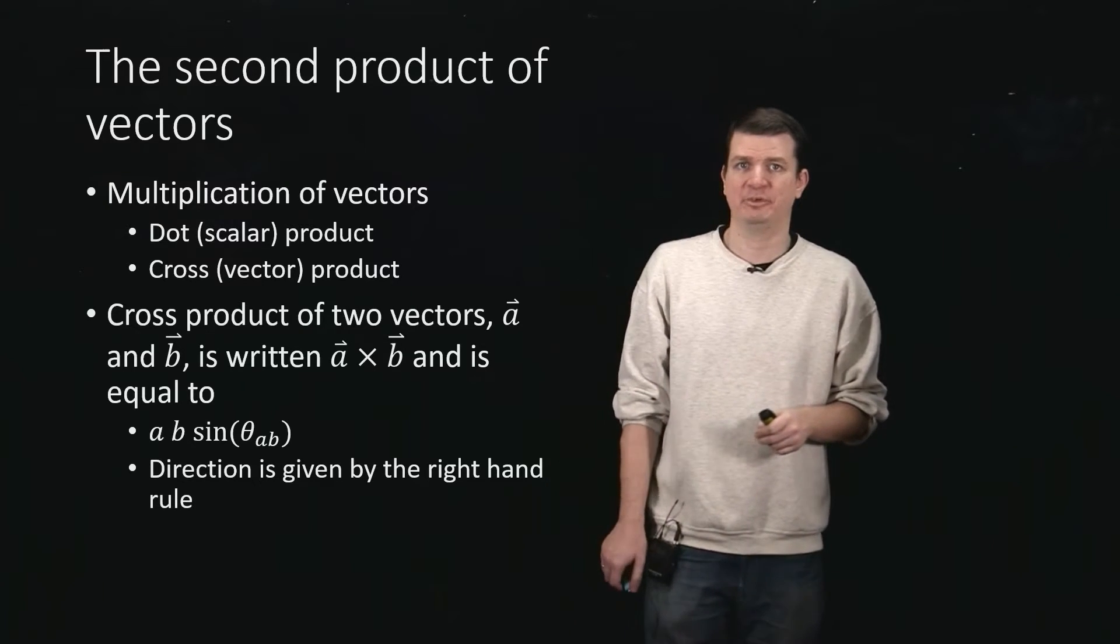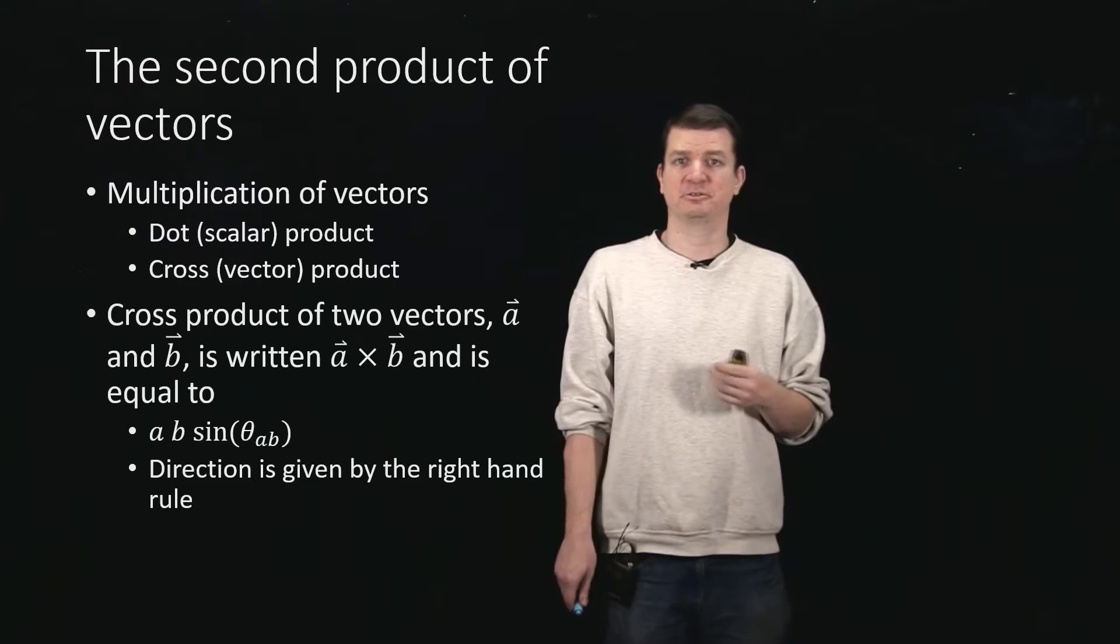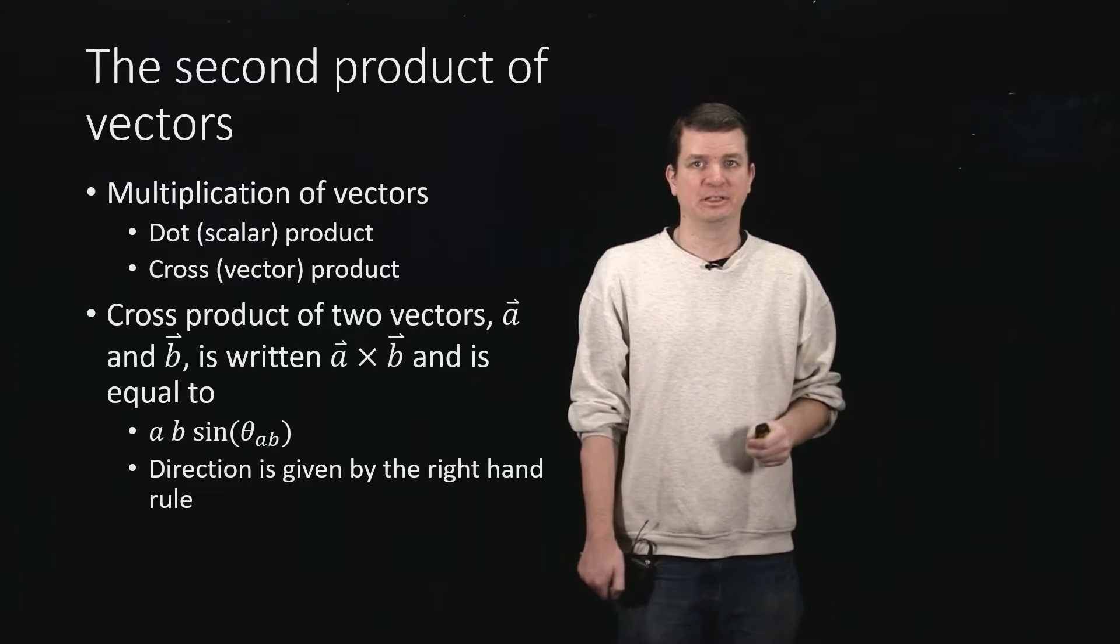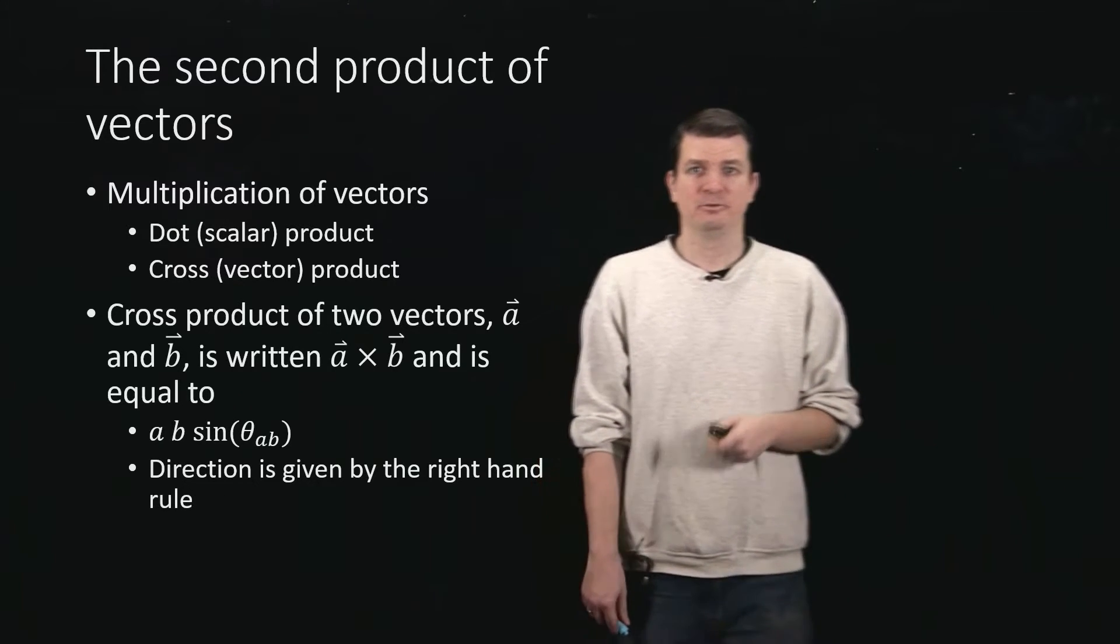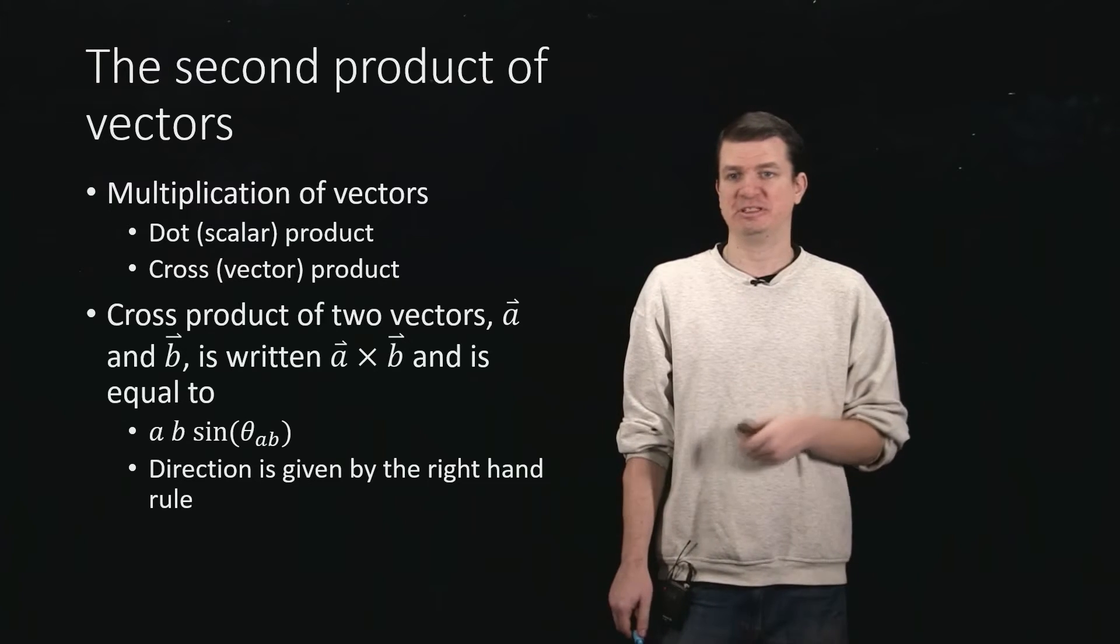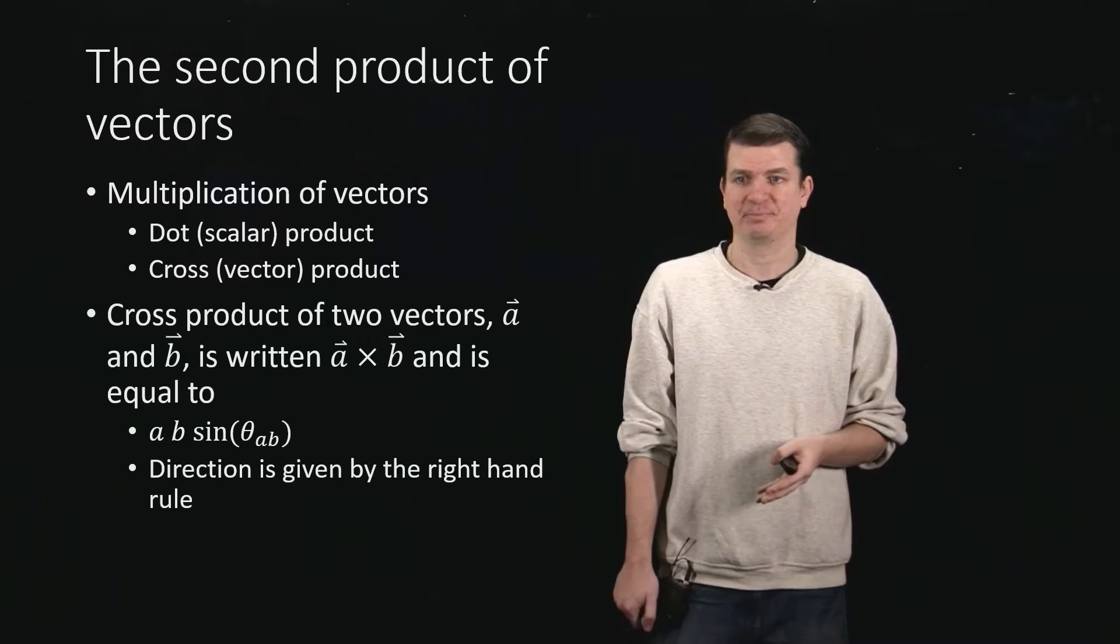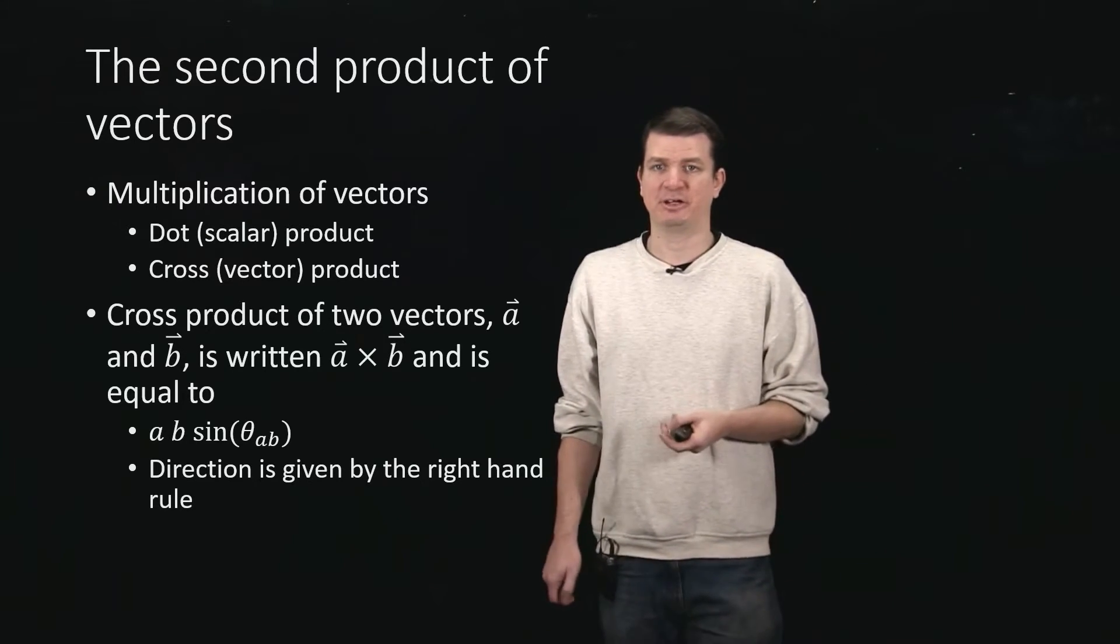But then we have to take one step further, which is the fact that this is a cross-product or vector product. So we're supposed to get a vector, which means we need to specify a direction for this result. And the direction is given by the right-hand rule.